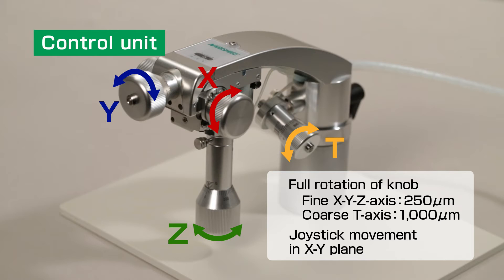The T-axis is a new feature that provides coarse oil hydraulic movement of 1000 microns per rotation. It is used for adjusting the insertion depth of the pipette and temporarily retracting the pipette from the petri dish.